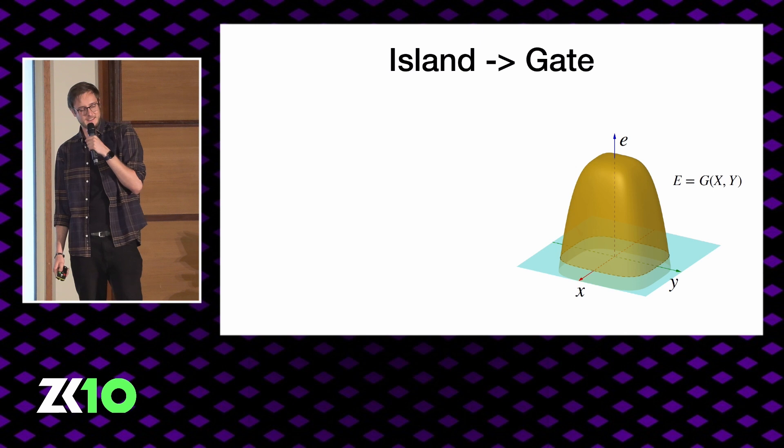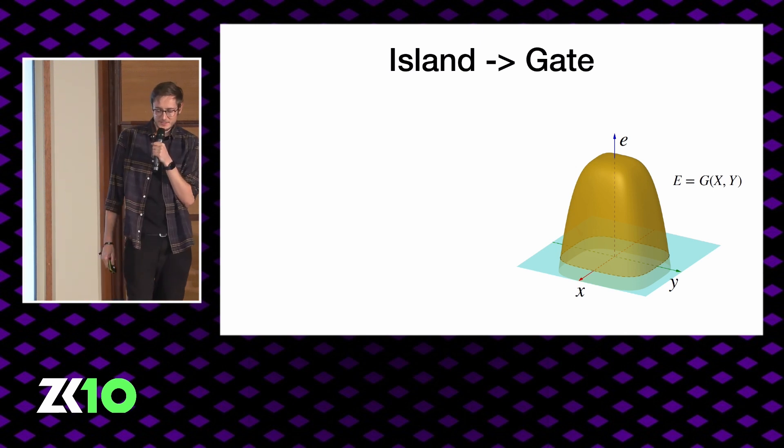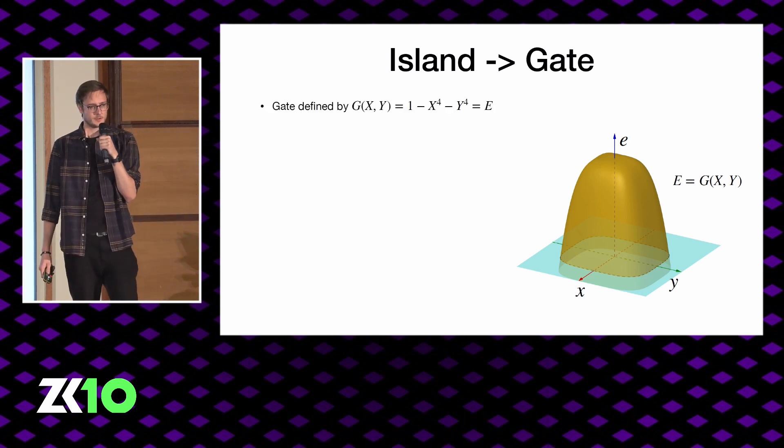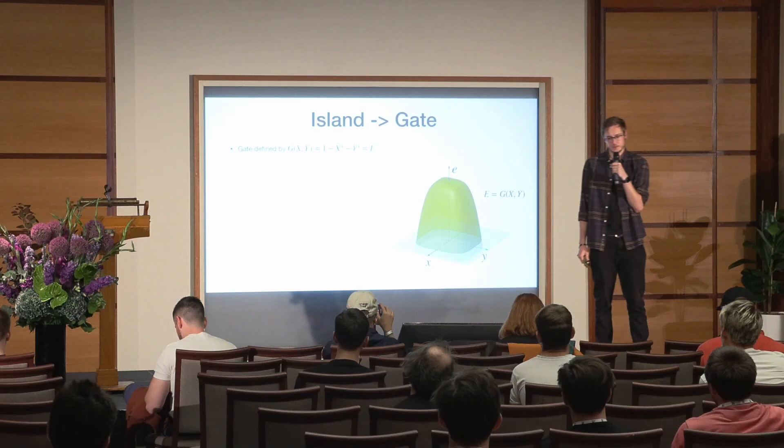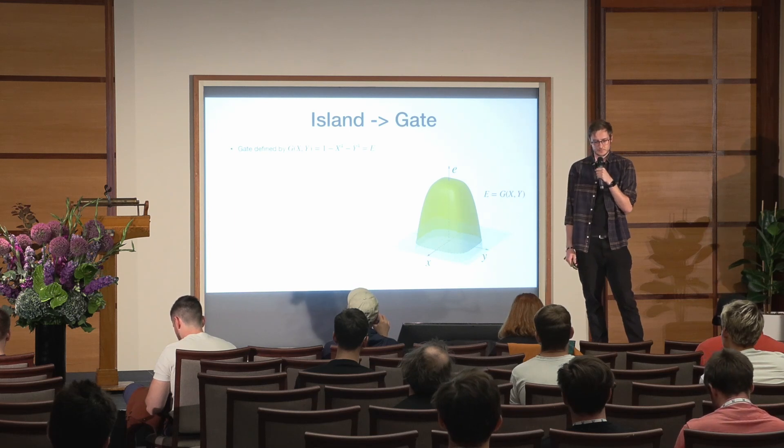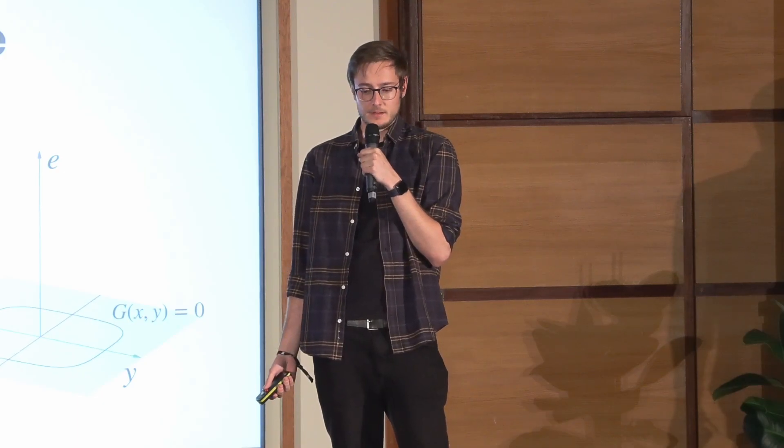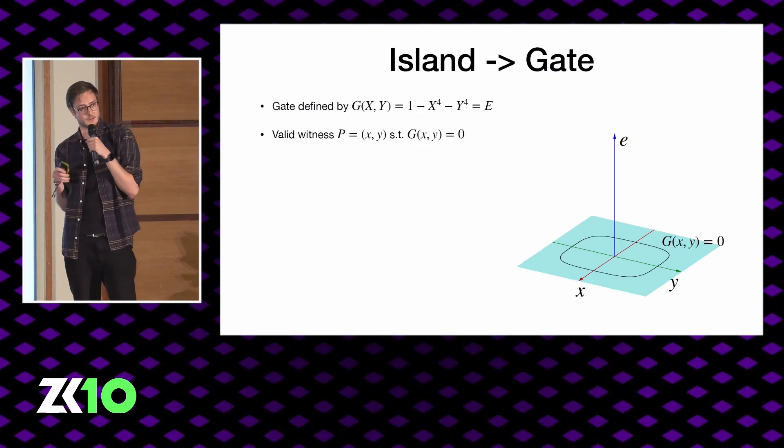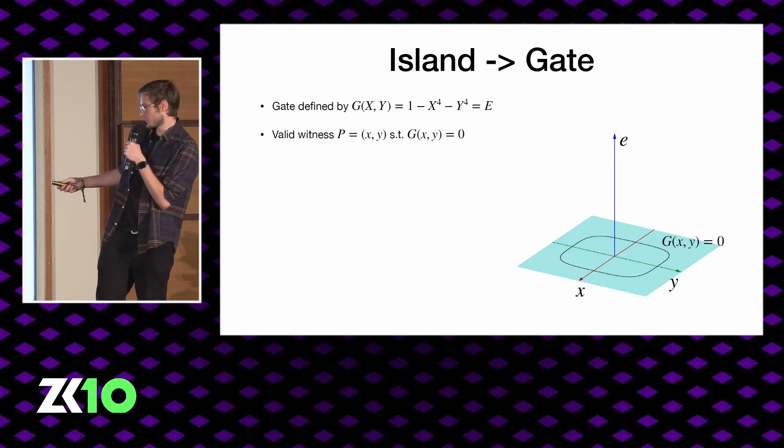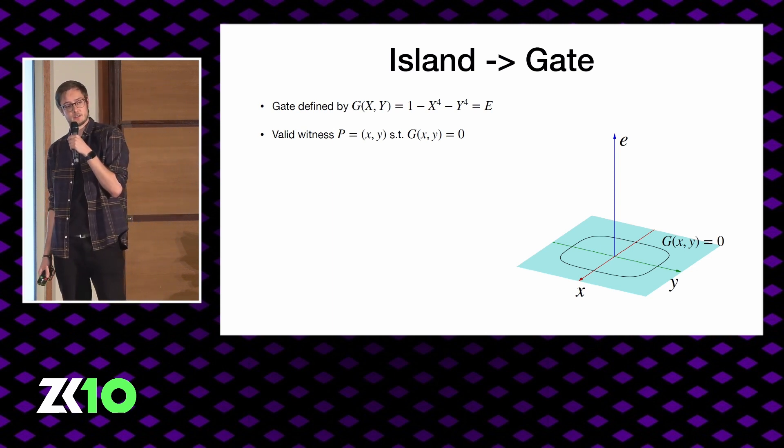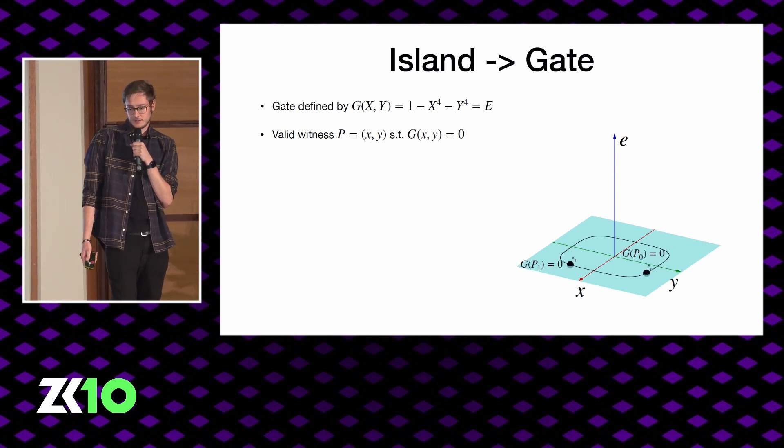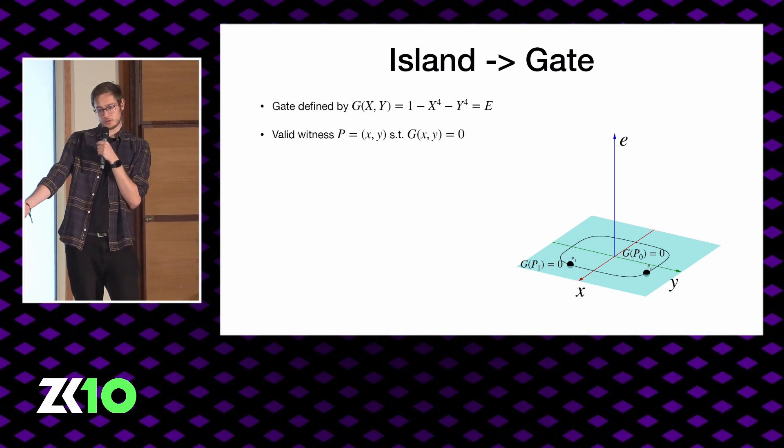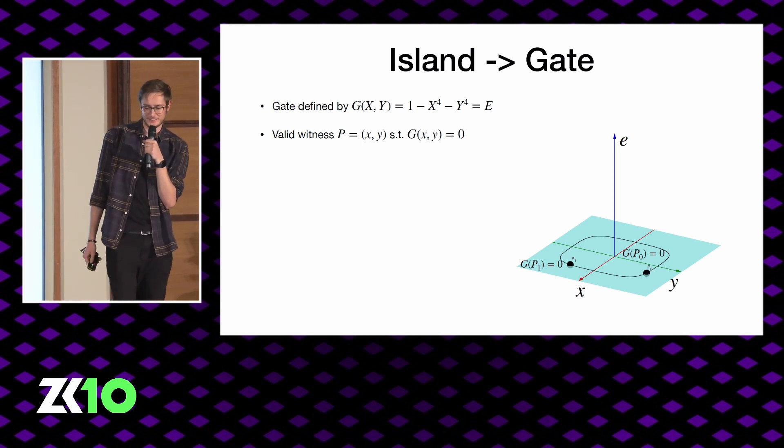Now so you may wonder, how does this actually relate to snarks? So in our analogy, this island here was actually defined by a polynomial. And this polynomial, you give it two coordinates x and y, and for any point on this island it will spit out the elevation you're at. This is just like in a snark where gates are these polynomial equations. And the reason why we're interested in the shore is that these are the points where the equation equals zero. So we're interested in the valid witness points. In this example, you had P1 and P0 which were on the shore, and trust me, but these evaluate to zero at this place.